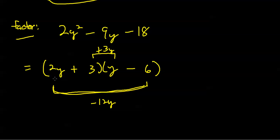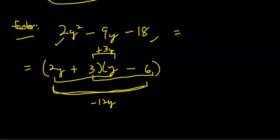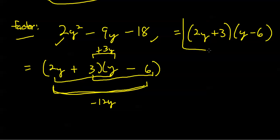The first product is 2y squared, so that checks. The last product is negative 18, so that checks. My final answer is 2y plus 3 times y minus 6. Again, it's a trial and error process — you just have to try juggling things around until you find a layout that works.